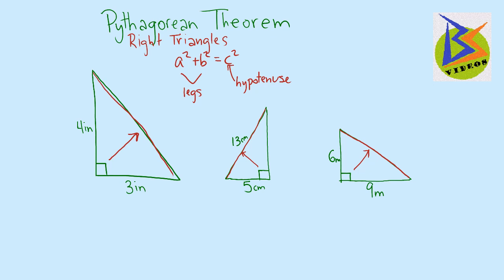Let's take a look at our first example, where we have a 3 inch by 4 inch by something inch right triangle. We're going to use our Pythagorean Theorem that says a squared plus b squared equals c squared. Let's say that a is 3 and b is 4. So we take 3 squared plus 4 squared equals, let's just call this x, x squared.